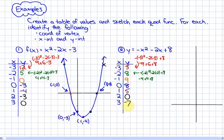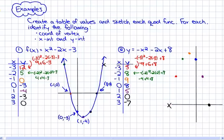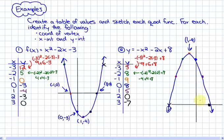If I graph these points, we will see: negative 3, 5; negative 2, 8; negative 1, 9; 0, 8; 1, 5; 2, 0. I won't fit 3, negative 7 on there, but I could assume by symmetry that there is a point there as well. We will notice that our vertex is at (1, negative 9), and that our x-intercepts are at (2, 0) and (negative 4, 0), and our y-intercept is at (0, 8).